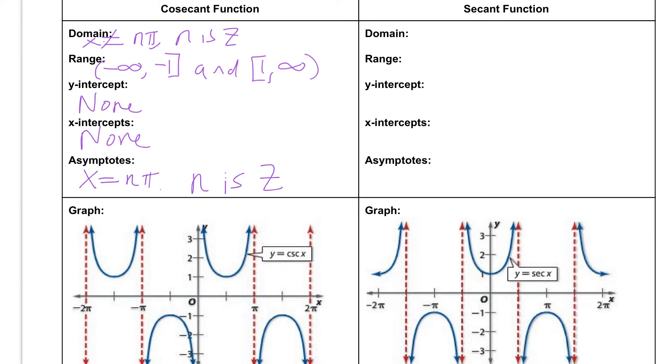If we take a look at our secant function, it has a lot of the same properties that the cosecant does. First of all, if we look at the domain, the domain is similar to the cosecant where it's going to have these asymptotes that we can't include, but they're different than what the cosecant function is. So here we say that the domain x cannot equal pi over 2 plus pi n where n is an integer.